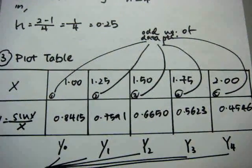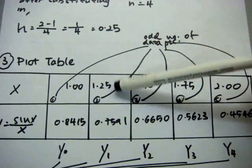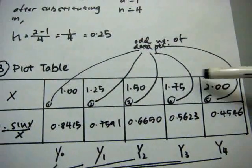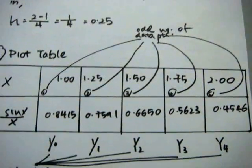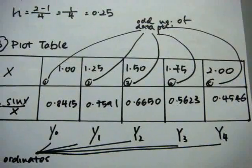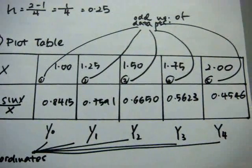From the table, you notice that I have odd number of data points. There are 5 altogether. And you can see that I have labeled y0, y1, y2, y3, and y4. These are my ordinates.